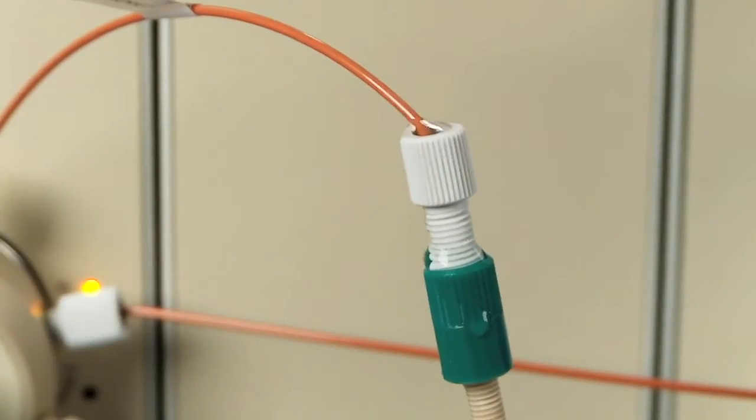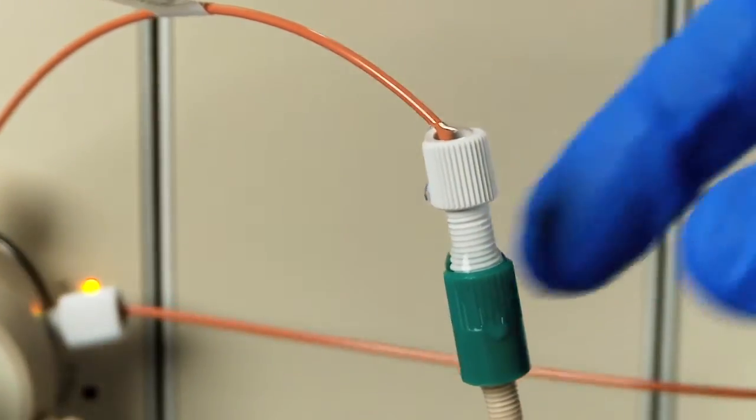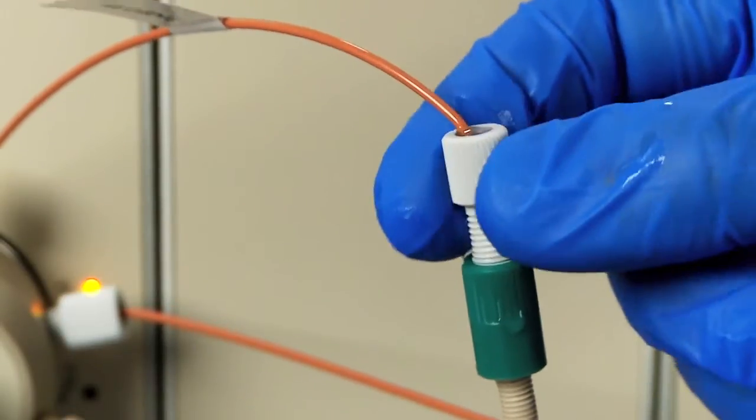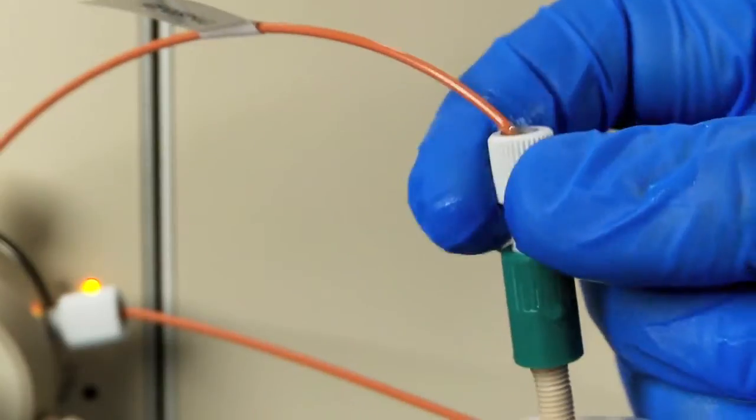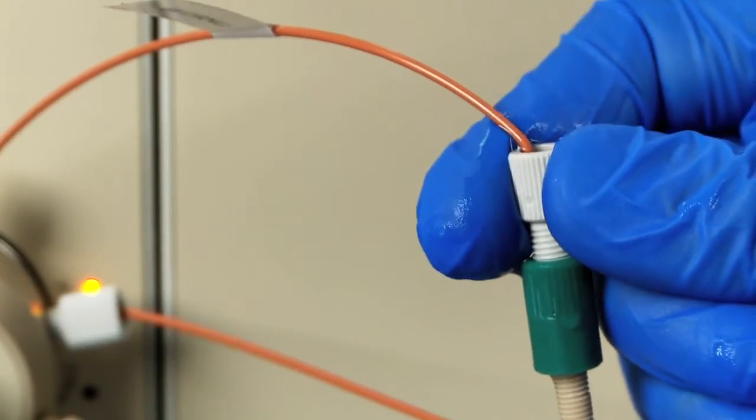Continue flowing buffer until the inlet port on top of the column is filled with buffer. With the buffer slowly flowing, tighten the male fitting of the sample injection valve outlet line into the column inlet port until it is secure.